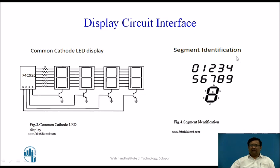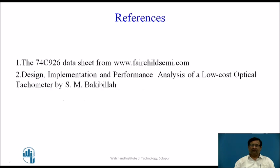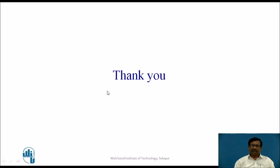Segment identification: segments are labeled A, B, C, D, E, F, and G. To display the digit zero, all segments except G are turned on. For the digit one, only segments B and C are turned on. References: IC74C926 datasheet from www.fairchildsemi.com, and the paper 'Design and Implementation and Performance Analysis of a Low Cost Optical Tachometer' by S.M. Baki. Thank you very much.